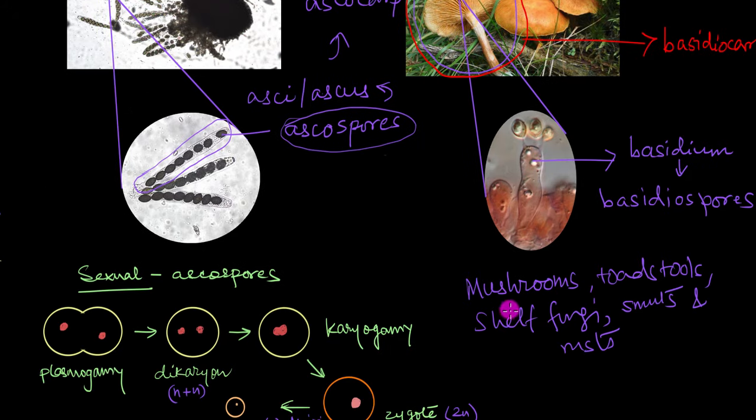Now remember all mushrooms, toadstools, then shelf fungi, then smuts and rusts, all these types of fungi belong to phylum Basidiomycota. So they are all basidiomycetes. Now if you are wondering why I didn't mention asexual reproduction here, that's because usually all basidiomycetes reproduce sexually.